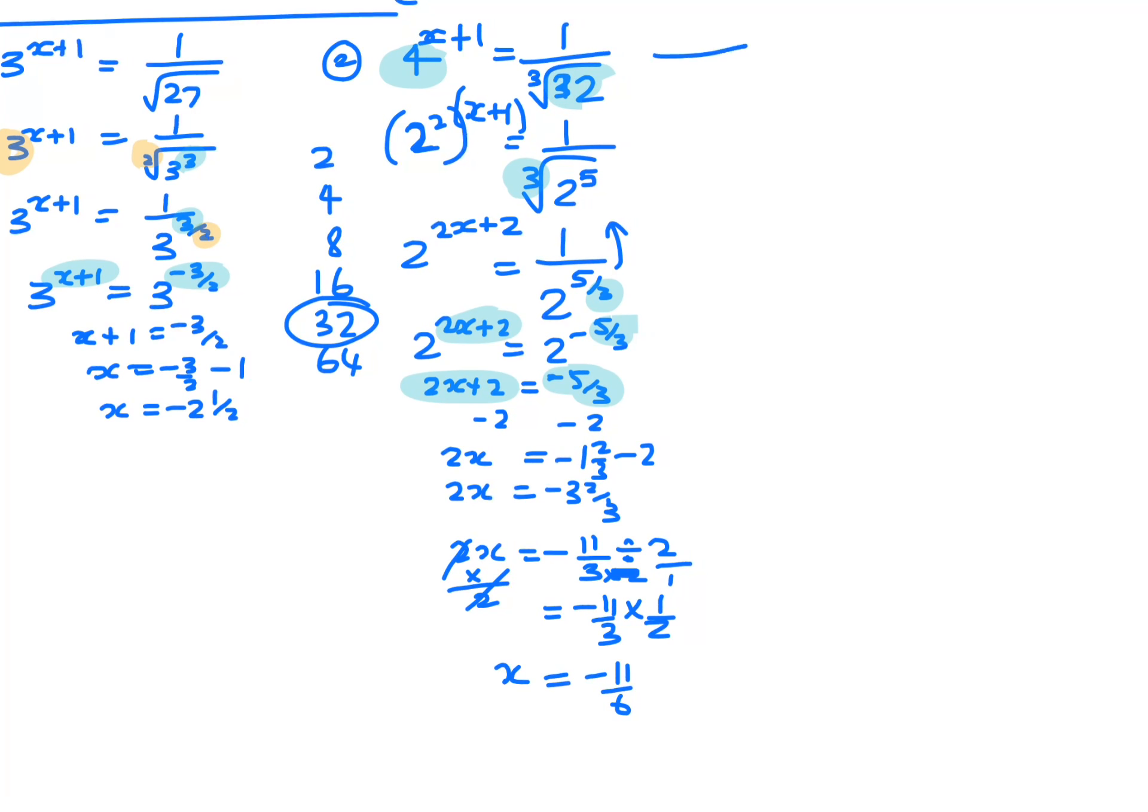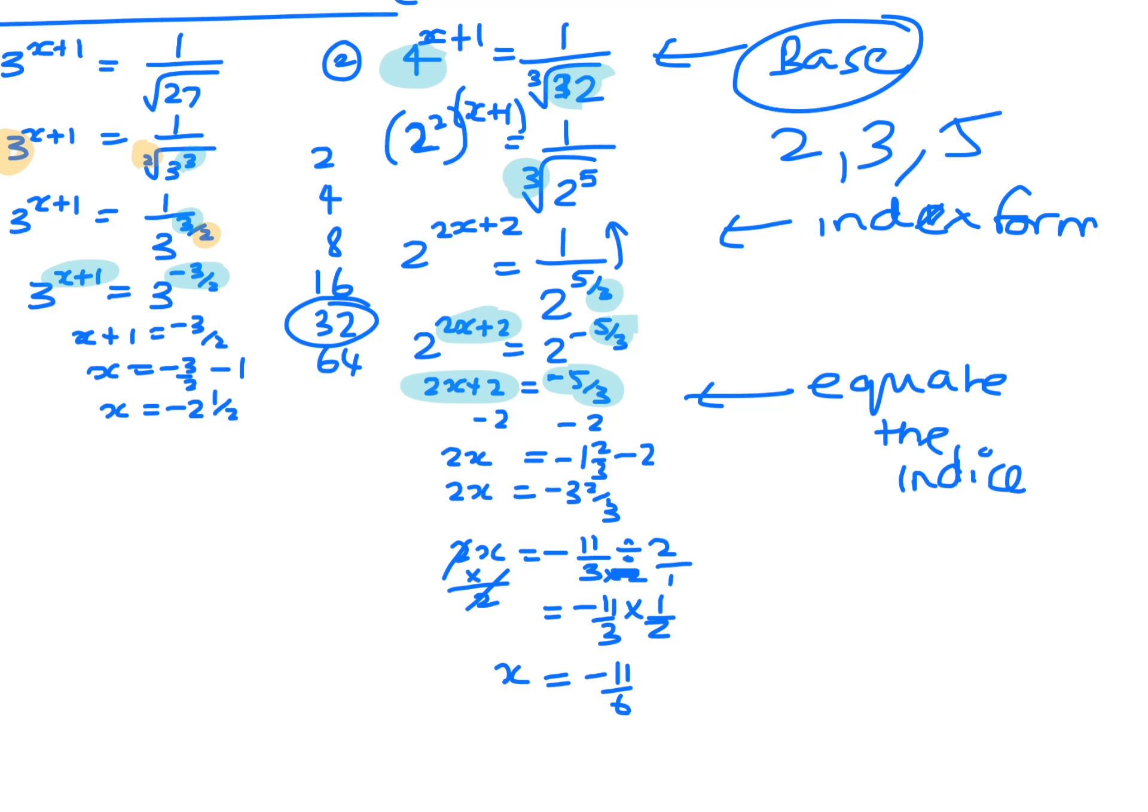So see the first step is you've got to look at what base, is it a base 2, 3, 5. And then the next step is you need to put it into index form, so you need to draw on all your indice rules to get it into index form. Once you've done that, then what you do is you just equate the indices because they've got the same base, and then this part here is just involved in solving the equation, and then that's it.